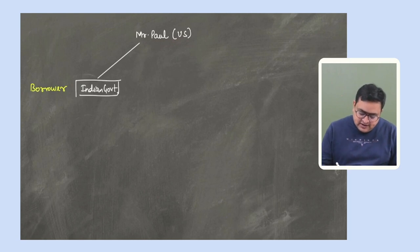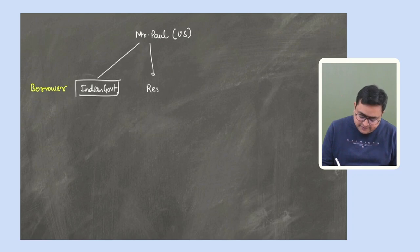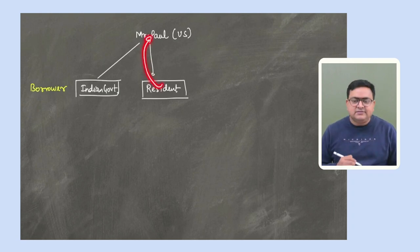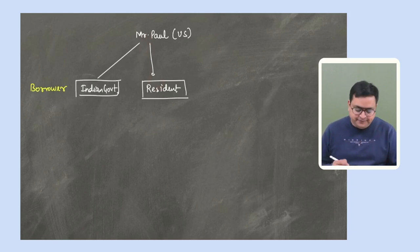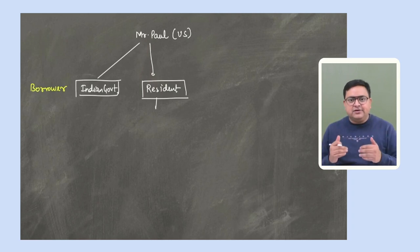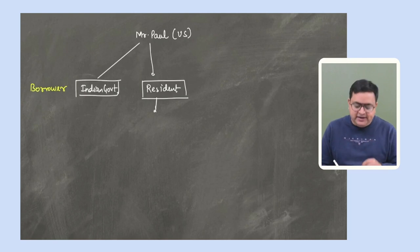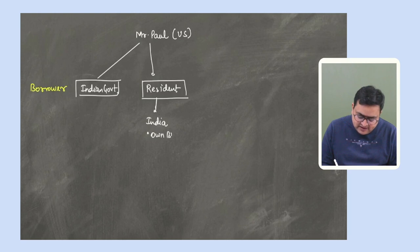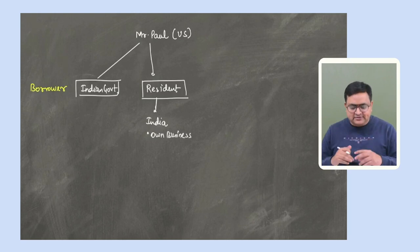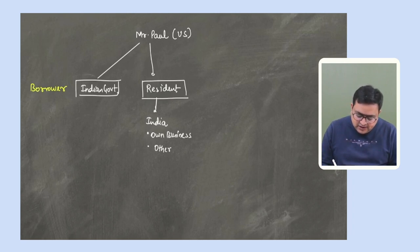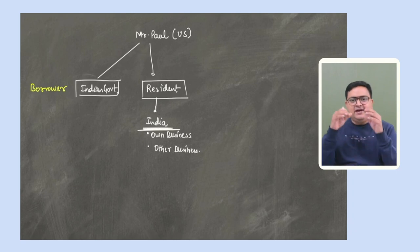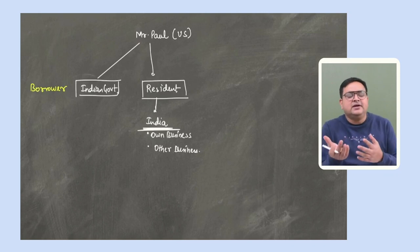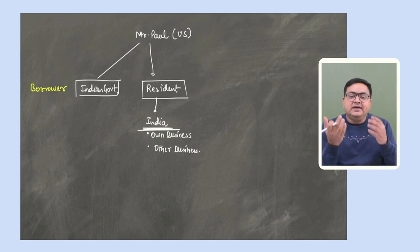The second scenario: if any Indian resident (not the government) borrows money from Paul and invests it in India — whether in their own business or by purchasing debentures or shares of another company — the interest paid to Paul on those borrowed funds is also deemed to arise in India. The key factor is that the borrowed money was used for the purposes of a business or profession in India.